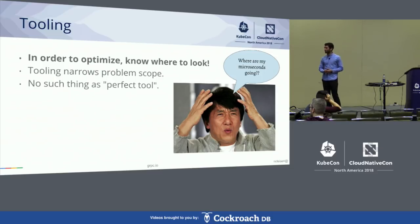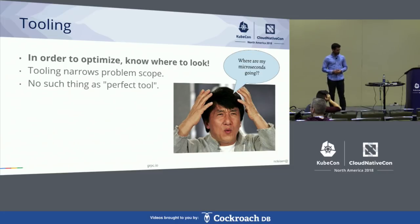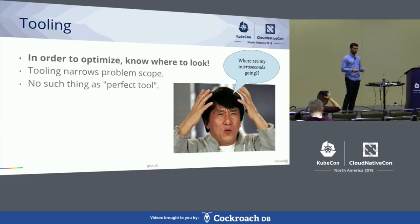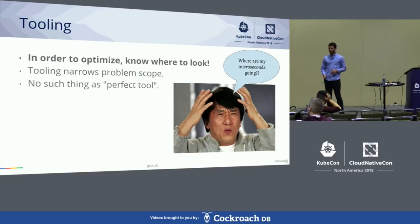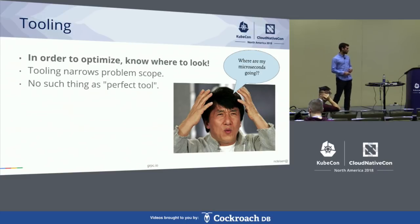Starting with tooling. In order to optimize code, you need to know where to look. I have confused Jackie Chan asking, where are my microseconds going? If you don't know, you cannot possibly start to perform optimizations. In my mind, tooling narrows the problem scope. There's no perfect tool — there's no one tool that's going to show all the hotspots to optimize, all the places where your code is slow. There's no one tool to rule them all, which is why it's important to use many tools.